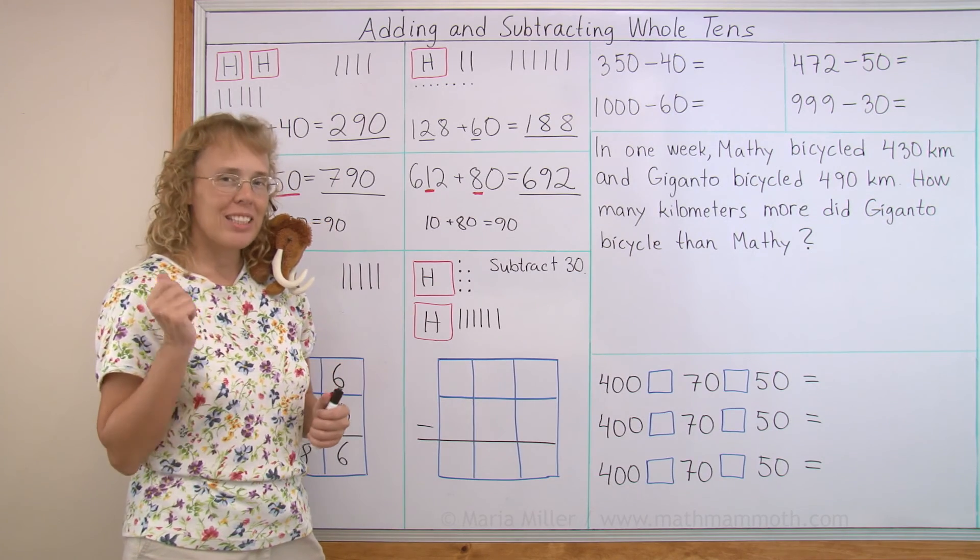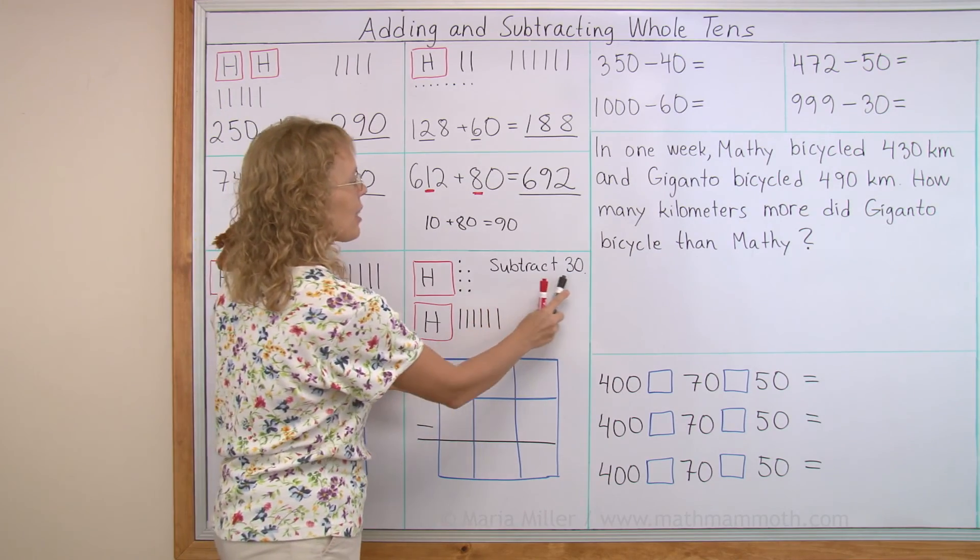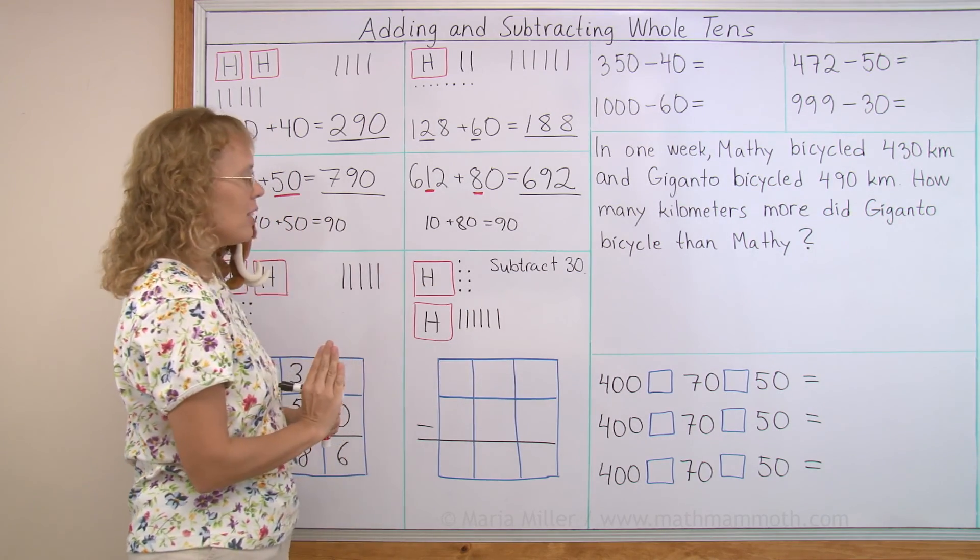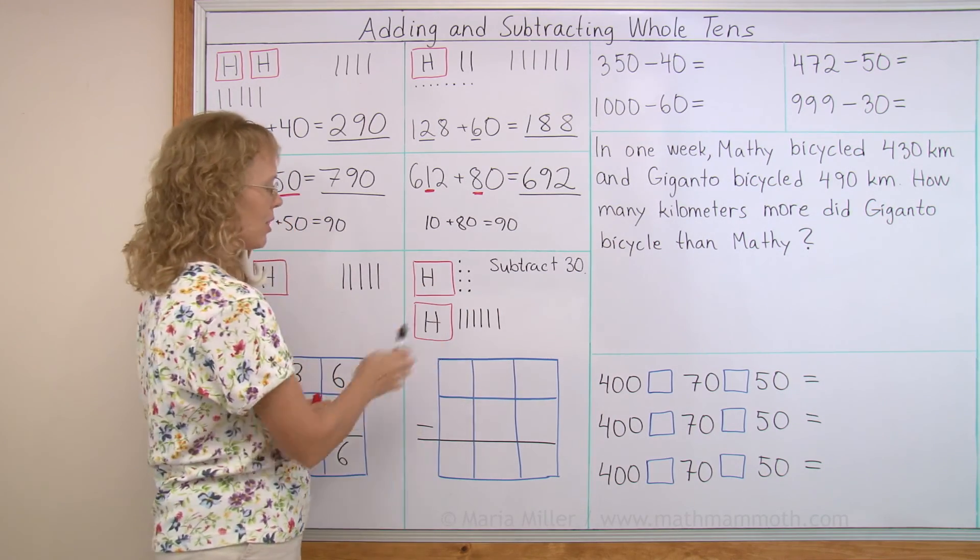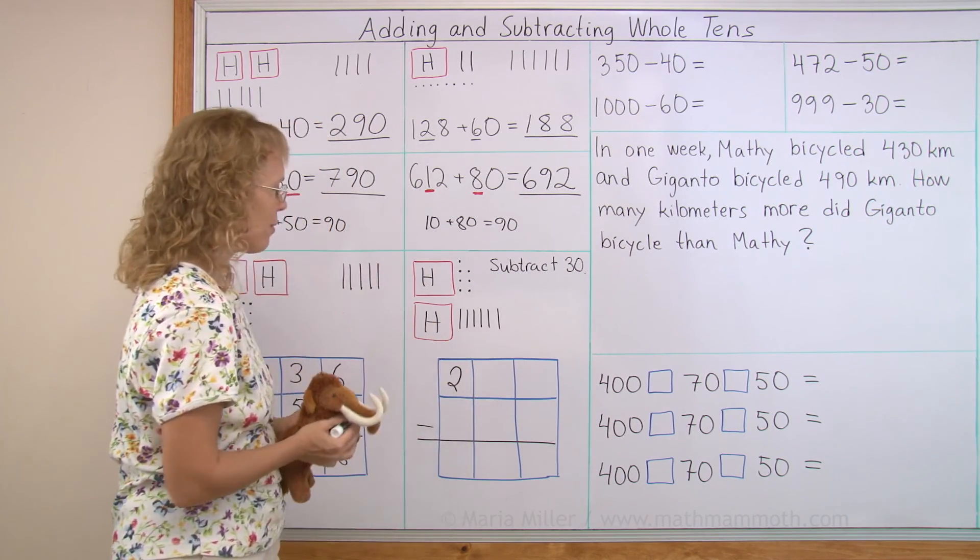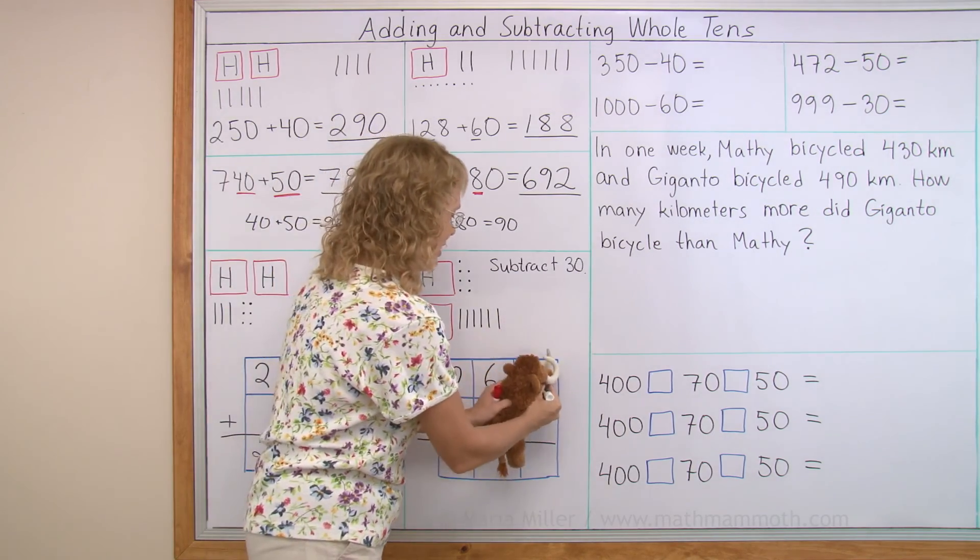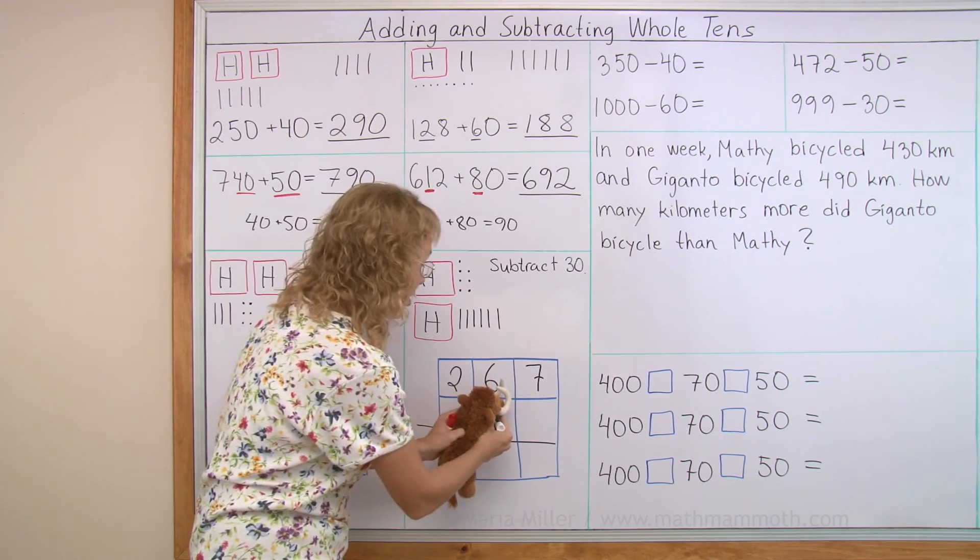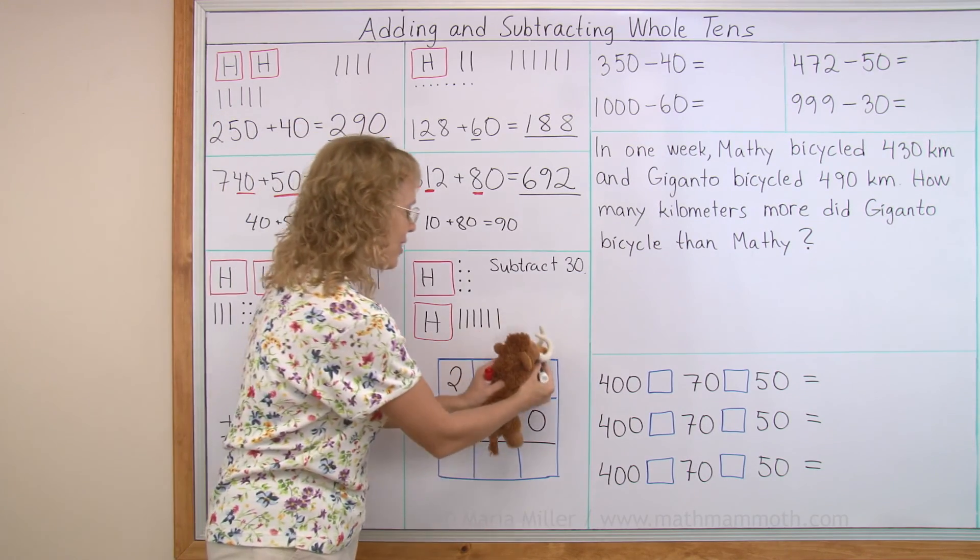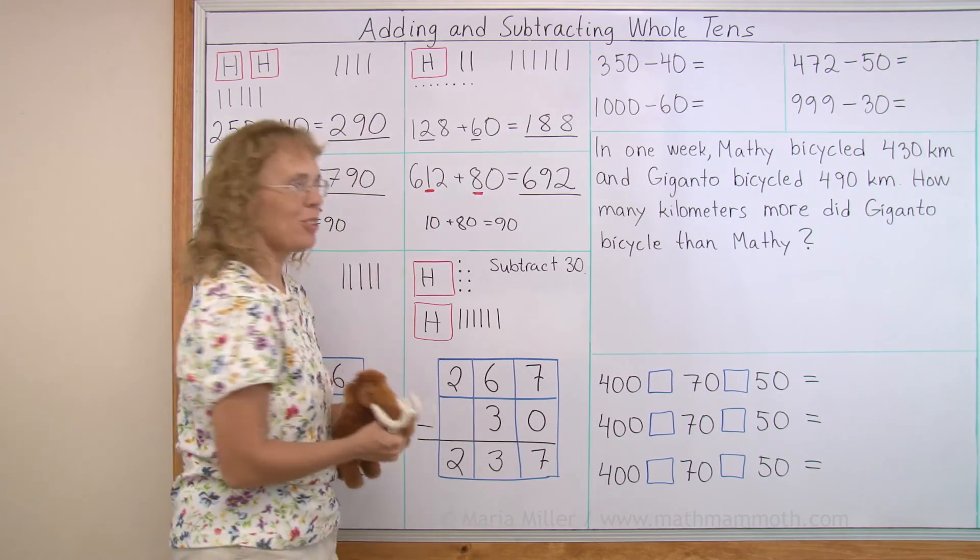And here we're going to do the same except subtract, not add. This is the number we subtract from, and we're going to subtract 30. So even though it is going to be easy just to use the picture to find the answer, let's practice writing the numbers in the grid. Matthew, come again, okay? What do we have here? Yeah, 200, yes, two goes there. And then, yeah, you count the tens, exactly, six tens, and then seven ones. Subtract 30, so it goes, yeah, Matthew knows where to put it, 30. And then you subtract in the ones, in the tens, in the hundreds. There's nothing to subtract in the hundreds.